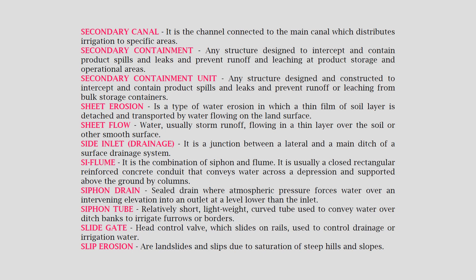Si flume: the combination of siphon and flume; it is usually a closed rectangular reinforced concrete conduit that conveys water across a depression, supported above the ground by columns. Siphon drain: a sealed drain where atmospheric pressure forces water over an intervening elevation into an outlet at a level lower than the inlet. Siphon tube: a relatively short, lightweight curved tube used to convey water over ditch banks to irrigate furrows or borders. Slide gate: a head control valve which slides on rails, used to control drainage or irrigation water.